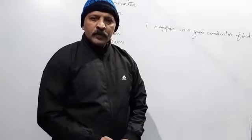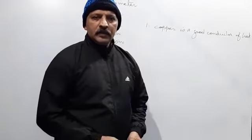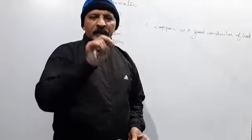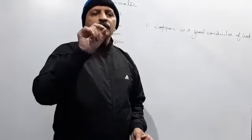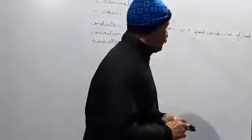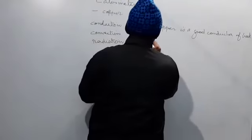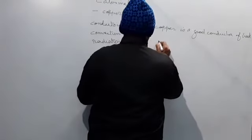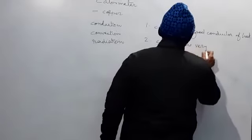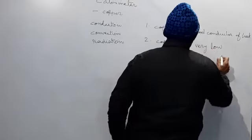Now, the second advantage of copper is, as you saw, copper has very low specific heat capacity. Specific heat capacity of copper is very low. So copper has very low specific heat capacity.